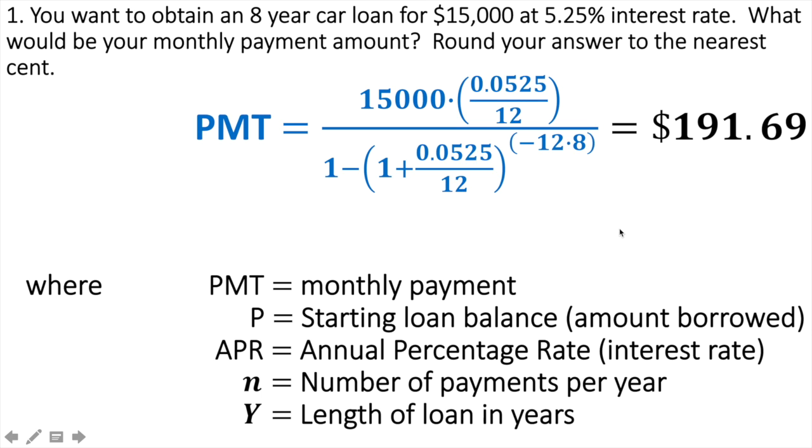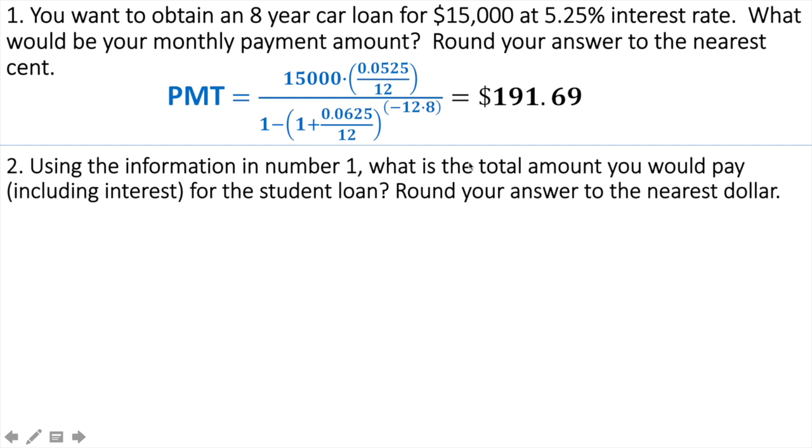Now that we've done that, we can calculate the total amount we'll pay on this car loan. We take our monthly payment amount, $191.69, and multiply that by the number of payments that we make. This is an eight-year car loan. In eight years, paying monthly, that's 12 payments per year, so 12 times 8 gives us 96. We take $191.69 and multiply that by a total of 96 payments. That will give us the total amount that we'll pay.